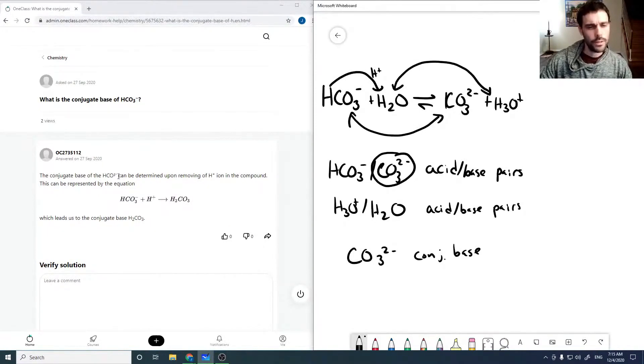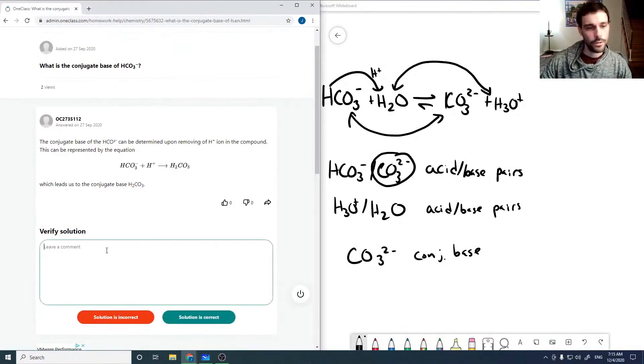So the conjugate base of HCO3- can be determined upon removing an H+, so that's true. But then they add one to give H2CO3, which is not true. So the conjugate base is CO3 2-, and I'm just going to say this one's not correct. All right.